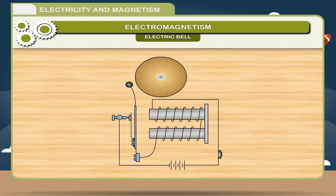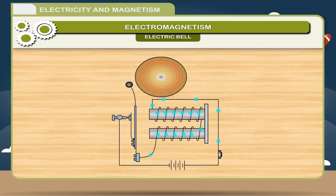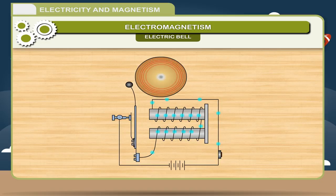After this, the circuit momentarily breaks and current stops flowing. This puts off the magnetic property of the electromagnet, and the coil returns back to its original position due to the spring action of the metallic strip. The armature again touches the screw and the process starts again. Thus, due to making and breaking of current of the electromagnet, the bell rings as long as the key is pressed.